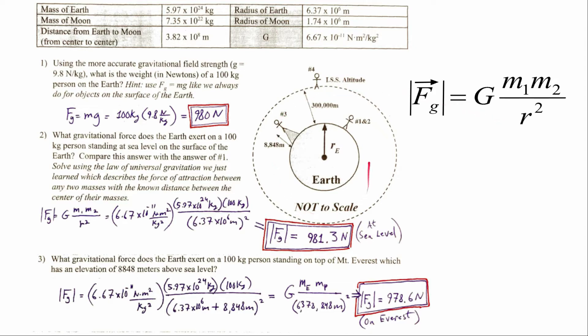The first couple of problems are getting you to think about the gravitational force of attraction between the Earth and a person standing on the Earth's surface, at the elevation of Everest, or orbiting in the International Space Station. Number one was getting you to think through how we've calculated the gravitational force for a person on the Earth's surface before Newton's universal gravitation equation — we just multiplied their mass, say 100 kilograms, times the gravitational field strength of about 9.8 Newtons per kilogram, giving about 980 Newtons.